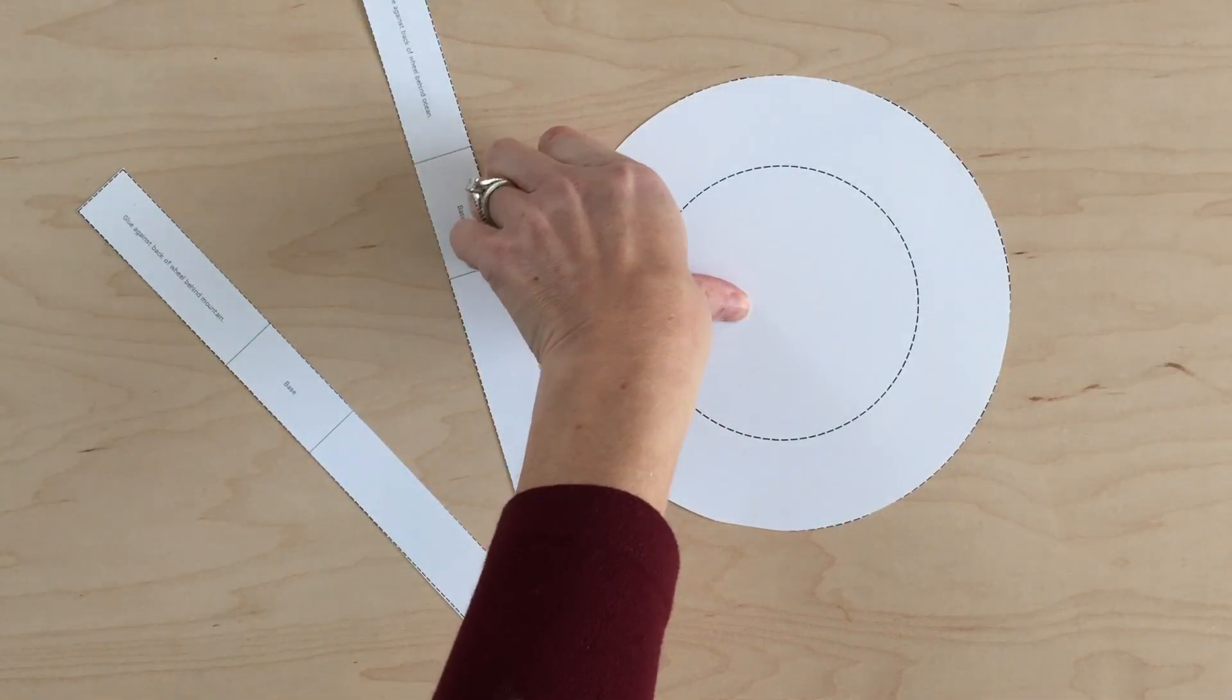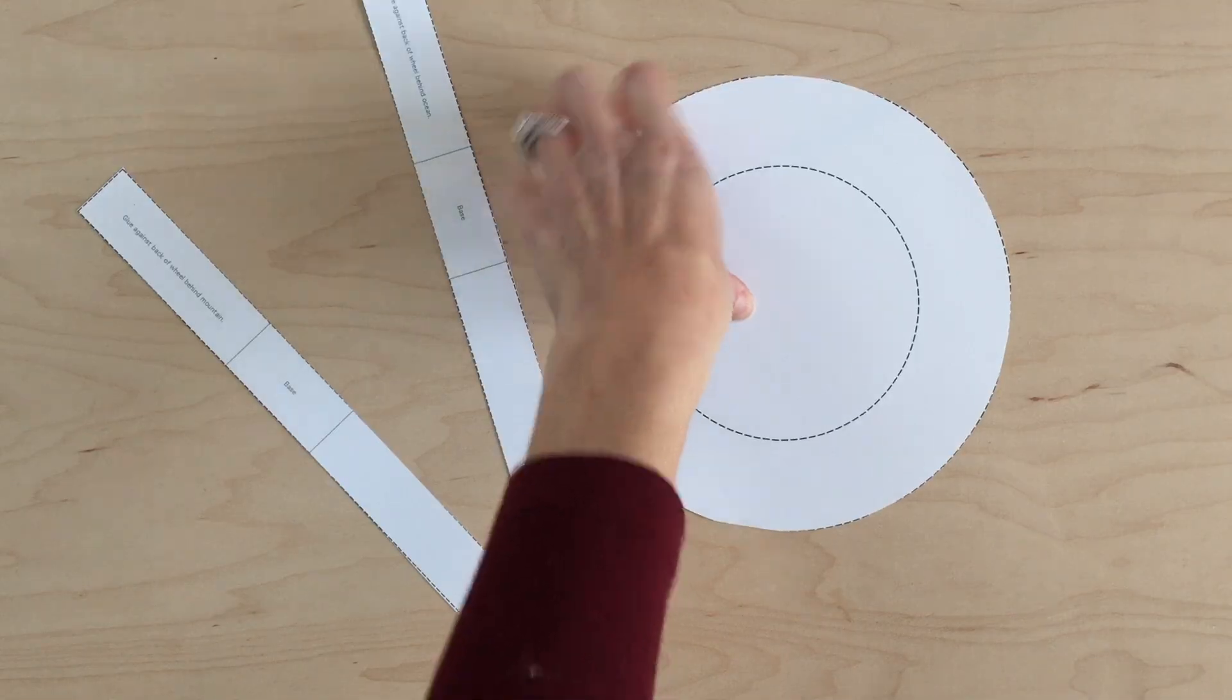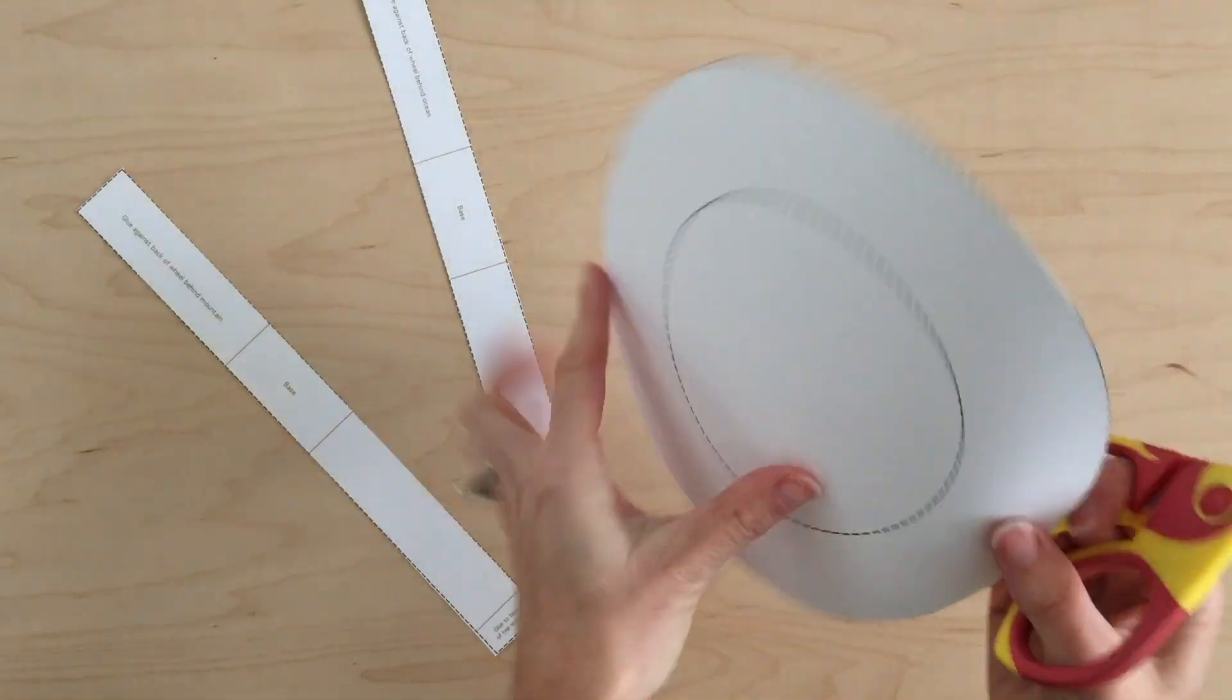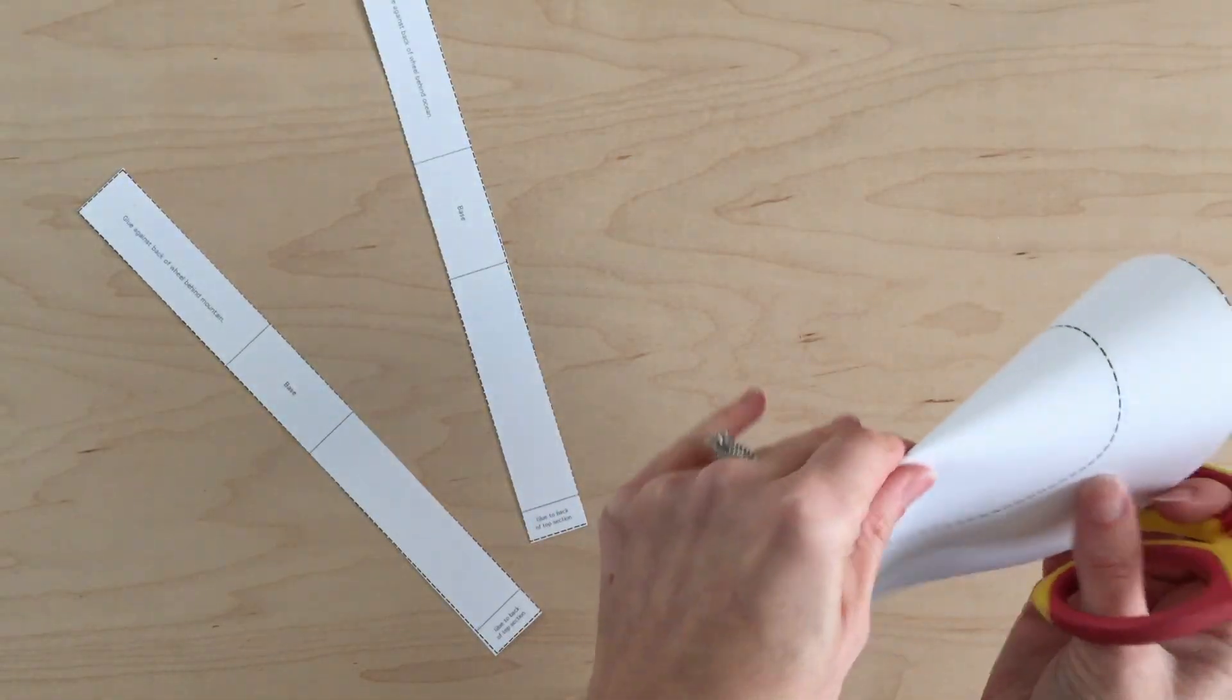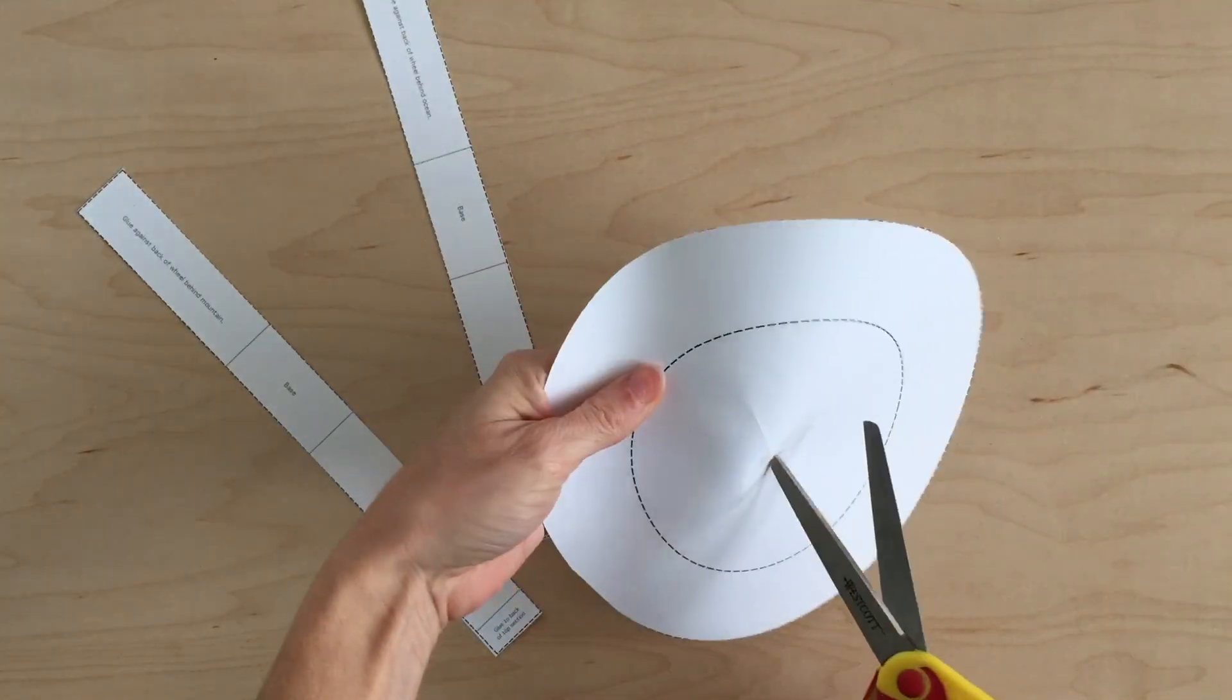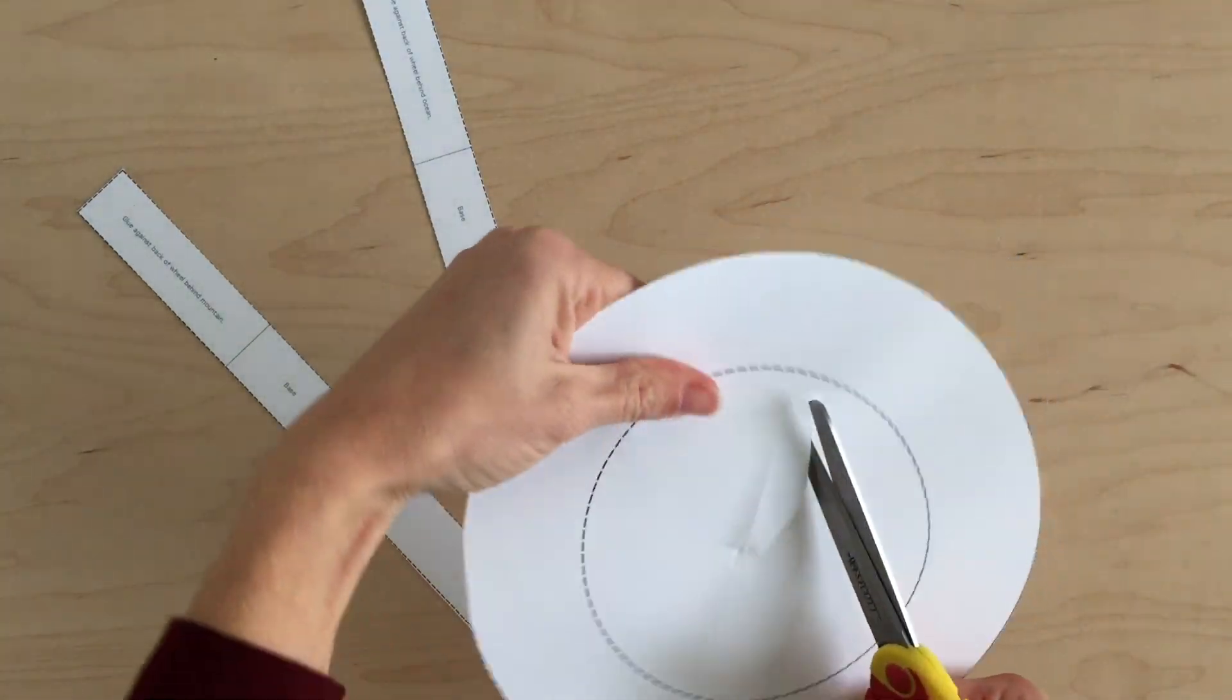If you're using cardstock instead of plain paper, you can forgo the cardboard. To make a hole in the middle, just bend it a little bit, cut, and then stick your scissors in the hole that you made.